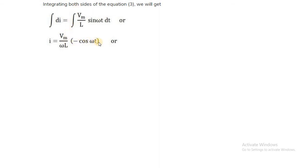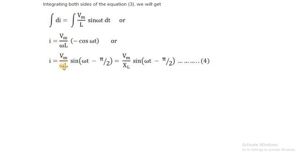So the value of i equals Vm upon omega L in bracket minus cos omega t. The value of i is obtained in terms of cosine. To convert it to sine form, since cosine was minus, and minus cos omega t equals sin of omega t minus pi by 2, we write i equal to Vm upon omega L sin omega t minus pi by 2. Replacing omega L with XL, the equation becomes i equal to Vm upon XL sin omega t minus pi by 2.